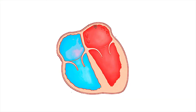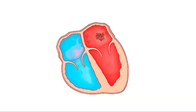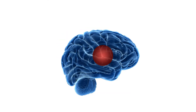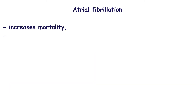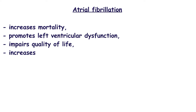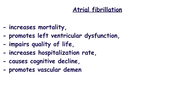In the case of atrial fibrillation, blood clots often develop, usually in atrial appendages. They can be dislodged and transferred with blood flow to cerebral vessels, causing ischemic stroke. For stroke risk assessment, the CHA₂DS₂-VASc score is used. Atrial fibrillation also increases mortality, promotes left ventricular dysfunction, impairs quality of life, increases hospitalization rate, causes cognitive decline, and promotes vascular dementia.